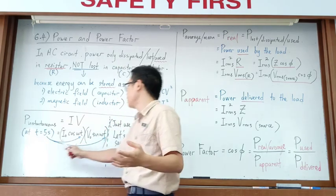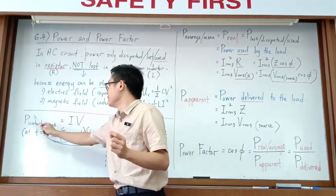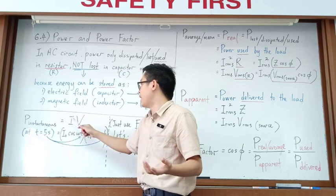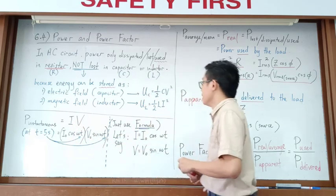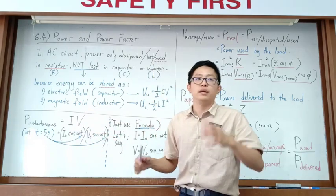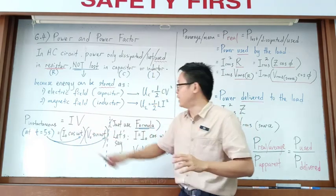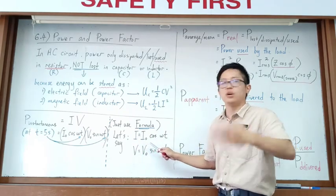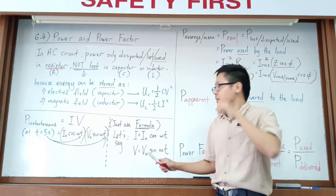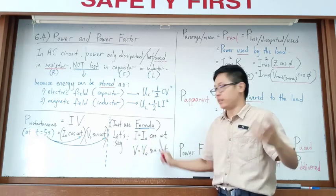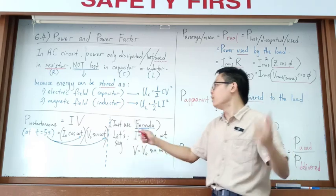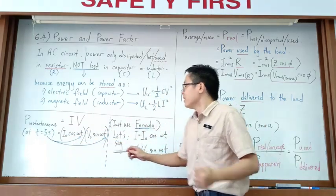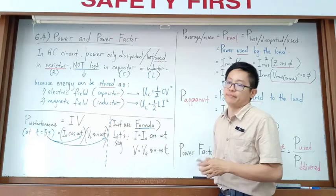The formula for power is P = IV. Current and voltage always change sinusoidally — they each have their own equation that changes with time. So at different times, the current and voltage are different. To find instantaneous power, we find the current and voltage at that specific time.